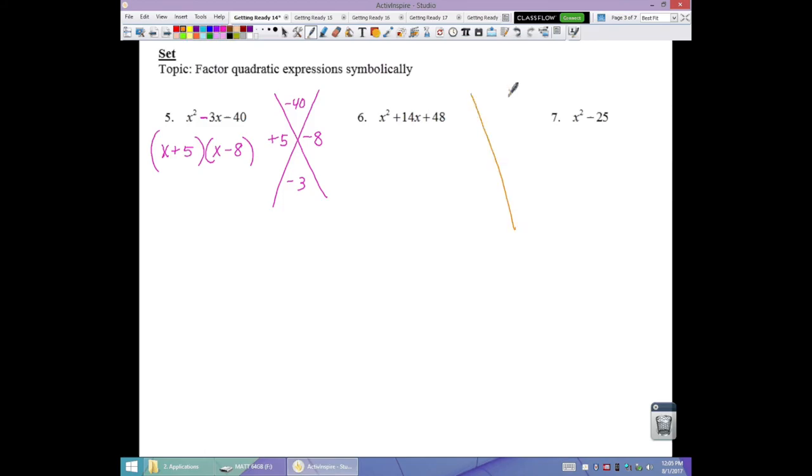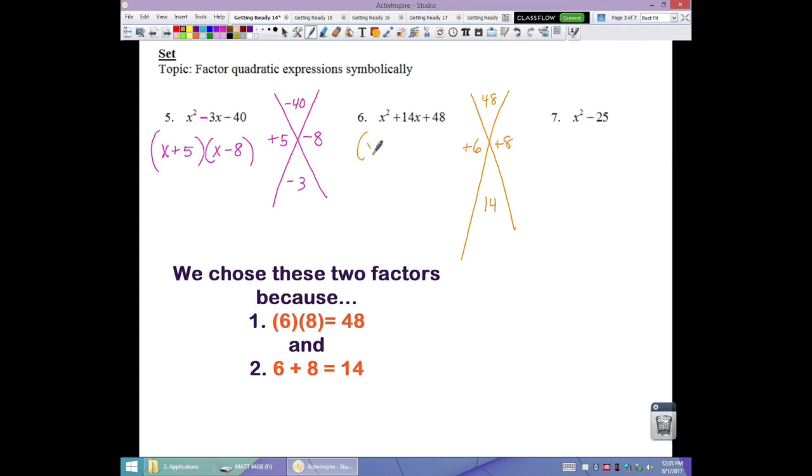Number 6. 48 for our product, 14 for our sum. I need, since it's a positive product, 2 of the same sign. Since the sum is positive, they're going to both be positive. So, what factors of 48 add to 14? 6 times 8. So, x plus 6, x plus 8.